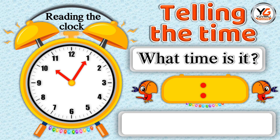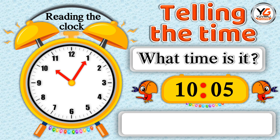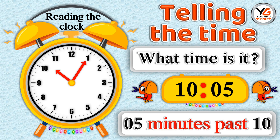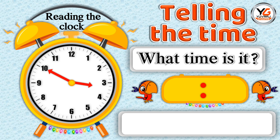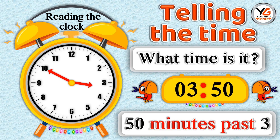What time is it? 10.25 — means 25 minutes past 10. What time is it? 3.50 — means 15 minutes past 3.